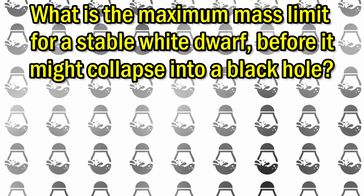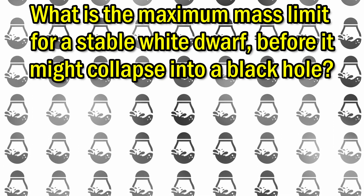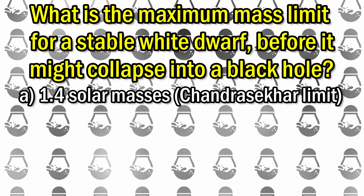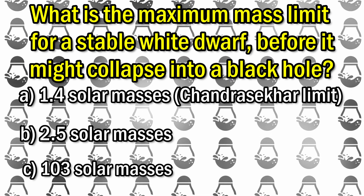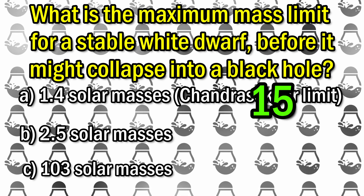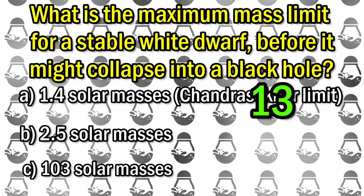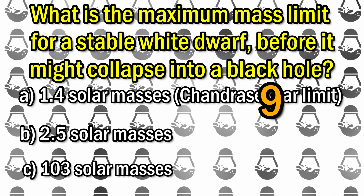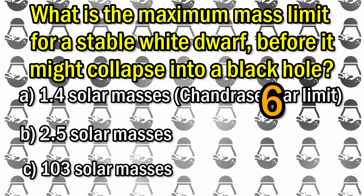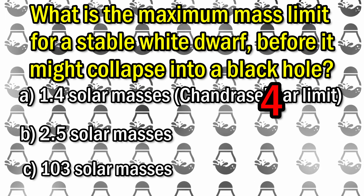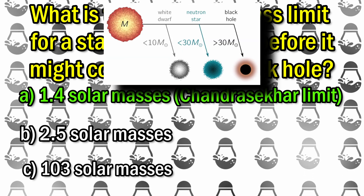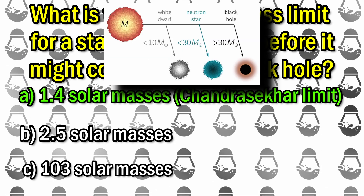Final question. What is the maximum mass limit for a stable white dwarf before it might collapse into a black hole? A: 1.4 solar masses — Chandrasekhar limit. B: 2.5 solar masses. C: 10 solar masses. The correct answer is A: 1.4 solar masses, Chandrasekhar limit.